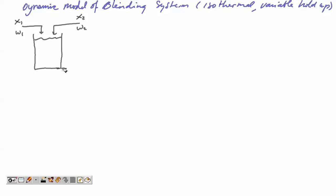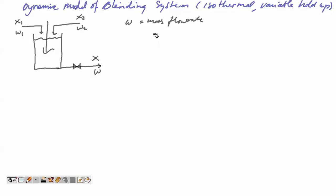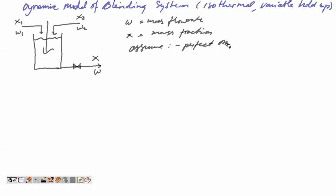The output stream is installed from the bottom of the tank with mass fraction x and flow rate w. To ensure perfect mixing, we install a stirrer. Here, w is mass flow rate and x is mass fraction, so w1 and w2 mean mass flow rate from stream 1 and stream 2. We assume that perfect mixing occurs in this process and also constant density.